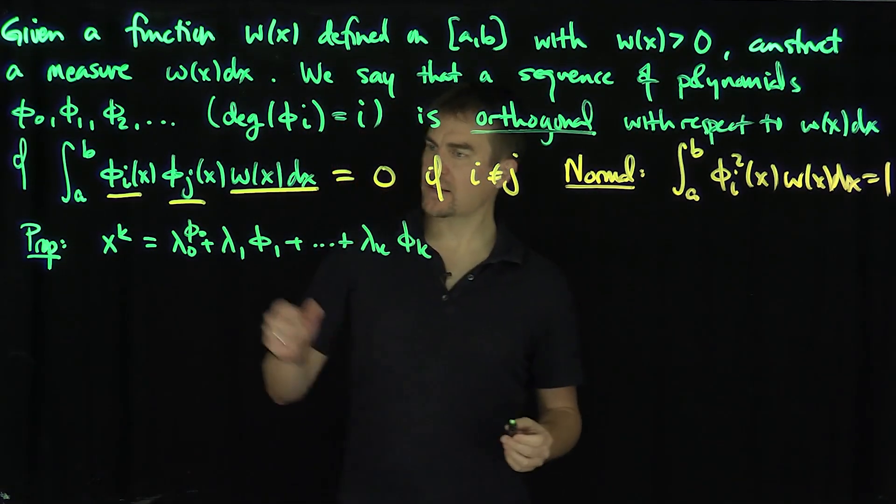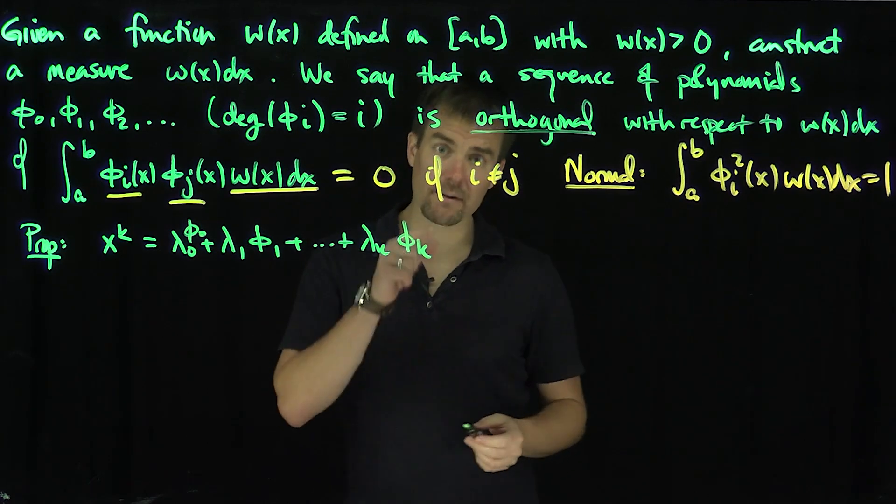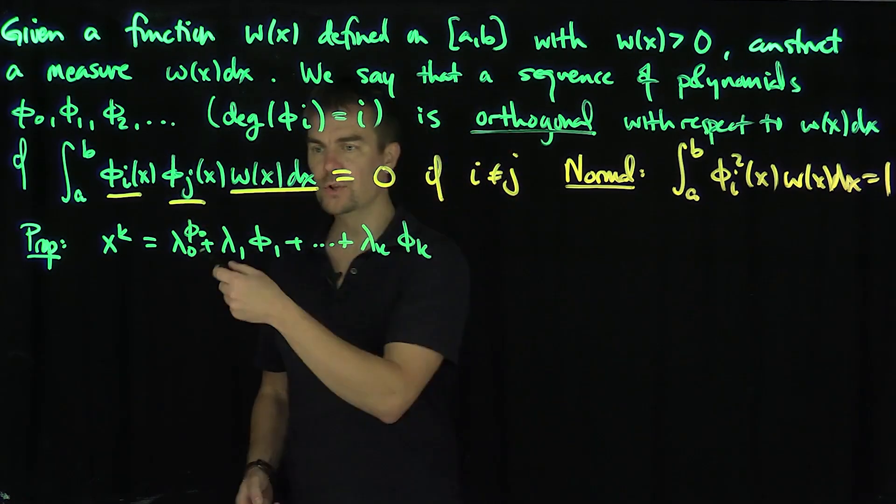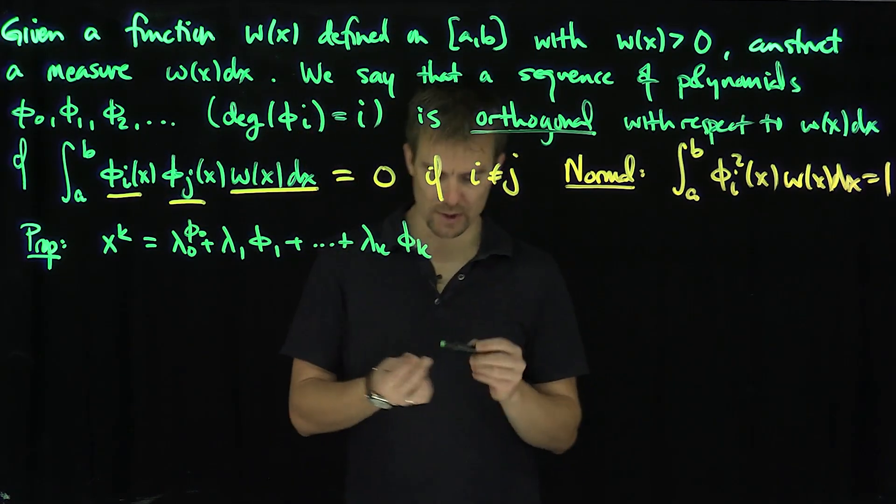I can write x^k as a linear combination of the first k of these orthogonal polynomials with respect to any weight. And of course, we can find out what these coefficients are. Using this, what we'll do is the following: